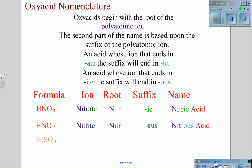For the formula H2SO4, this is the sulfate ion SO4, giving us a root of sulfur. Because of the -ate, we're going to end in -ic, giving us sulfuric acid.